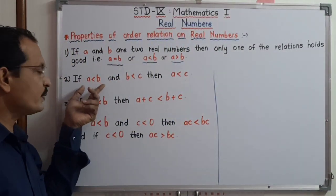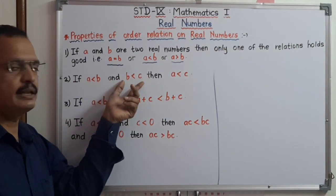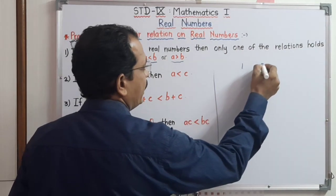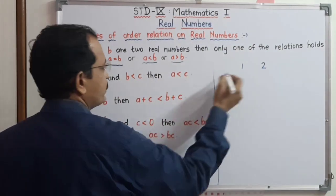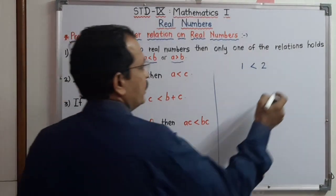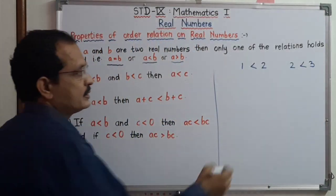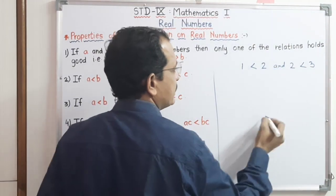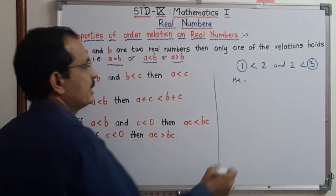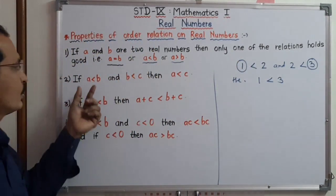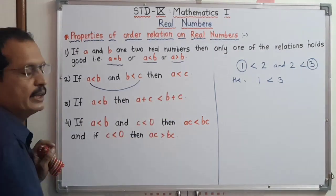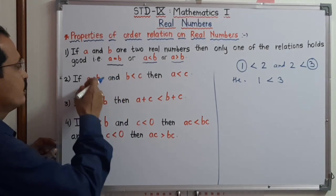The second condition is: if A is less than B and B is less than C, then A is less than C. For example, suppose A is 1 and B is 2, so A is less than B. And if 2 is less than 3, then we can observe clearly the relation between 1 and 3 — we say that 1 is less than 3. So the second rule is: if A is less than B and B is less than C, then A is less than C. By using this, we can find out the relation between the first and the third number.